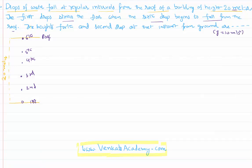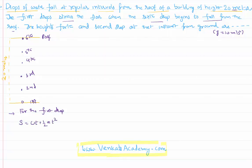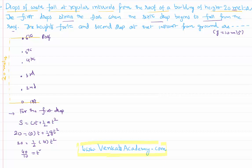For the first drop, it has covered the entire distance of 20 meters from roof to ground. Using the formula s = ut + ½at², with the drop starting from rest: 20 = ½ × g × t² = ½ × 10 × t². So 20 = 5t², giving t² = 4, which means the time taken by the first drop to reach the ground is 2 seconds.